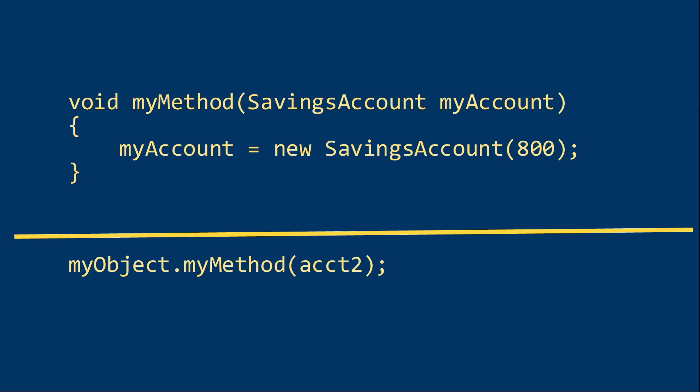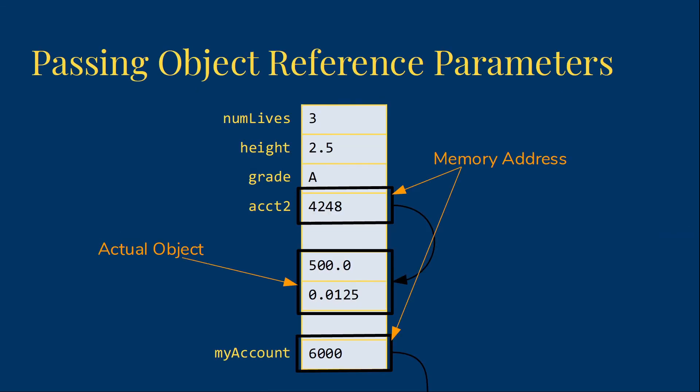So for example, if I were to do this, where after I pass in my account, I say my account is assigned new savings account. What will happen is we'll make the copy initially just like we did before. But then when we create the new object, the new savings account from my account, we'll have a new memory address.